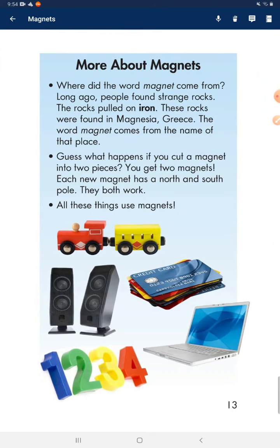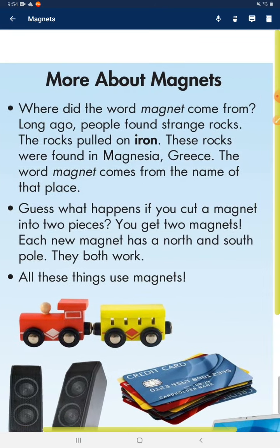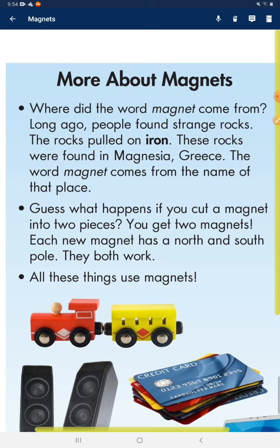More about magnets. Where did the word magnet come from? Long ago, people found strange rocks. The rocks pulled on iron. These rocks were found in Magnesia, Greece. The word magnet comes from the name of that place.